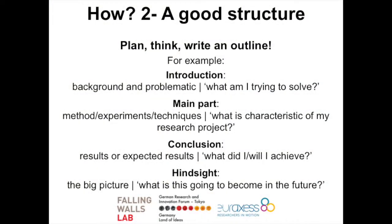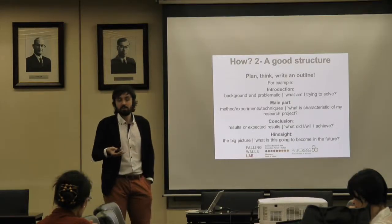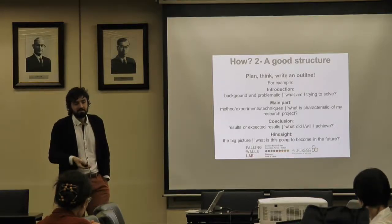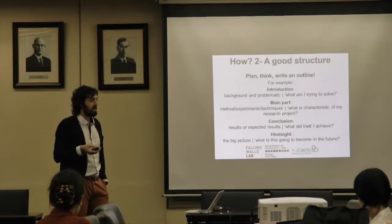Obviously, you should not sit in front of a computer and start writing the abstract online right when you want to submit. You need to plan it and think about how to arrange your different ideas. Maybe write an outline — that's more specifically true for a talk, but it's still important to prepare in advance. These are all the classic points you need to address: what is the problem, what is the background of your research, what you are trying to solve. The main part will be what is really specific about your research — maybe a method or a new technique. Then a conclusion, and if you have results, present some. If not, explain what you might expect as future results.